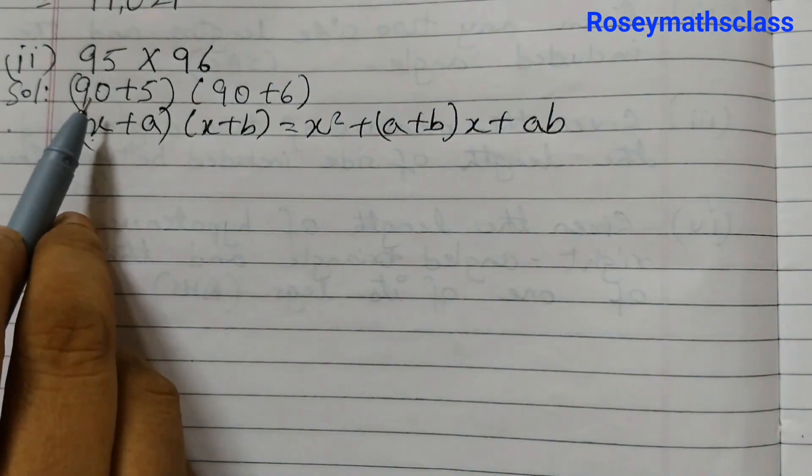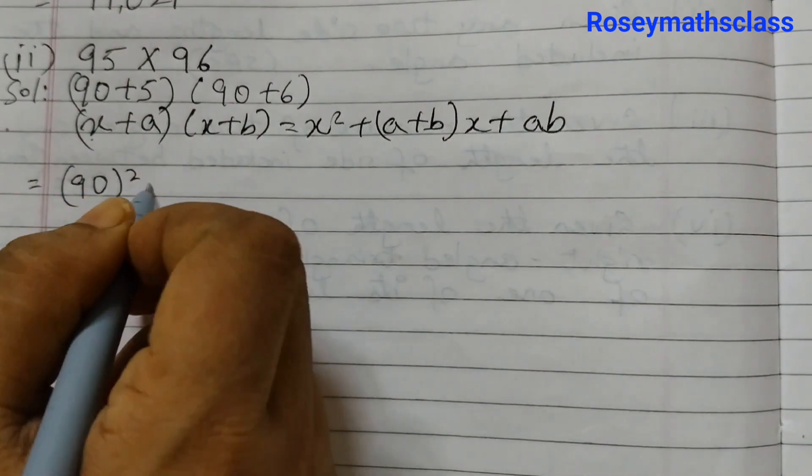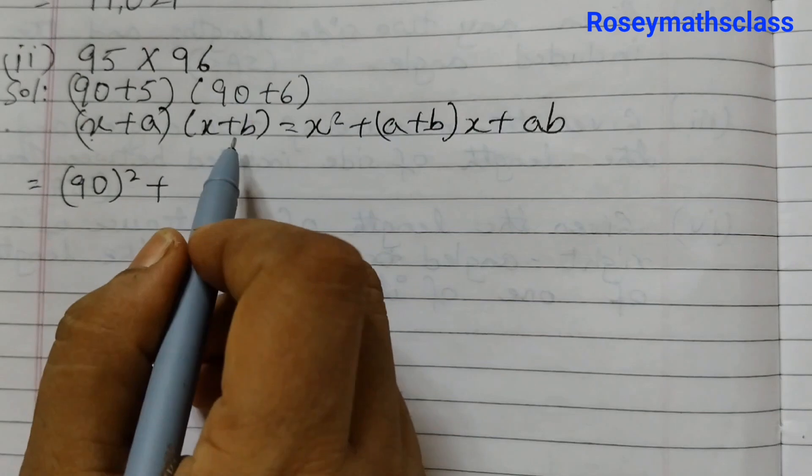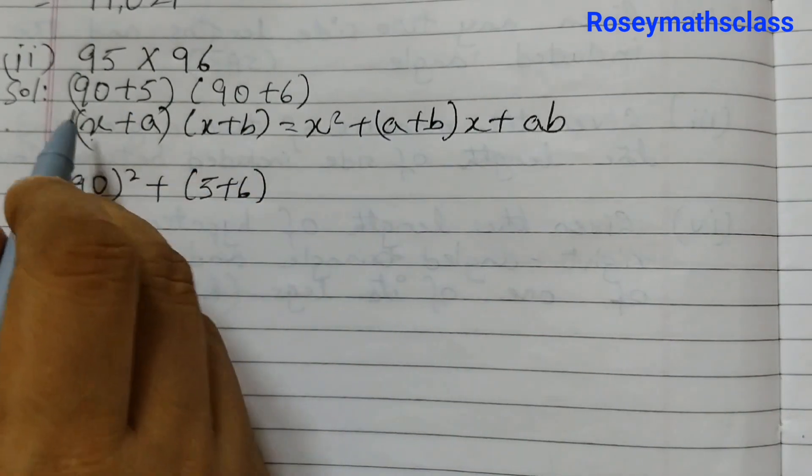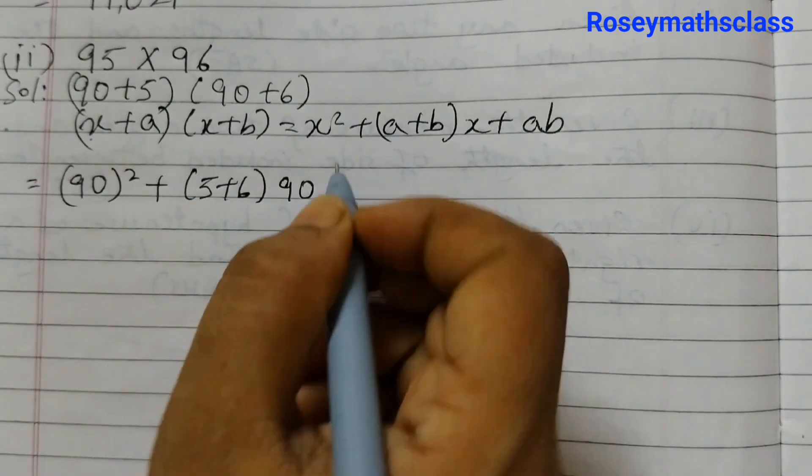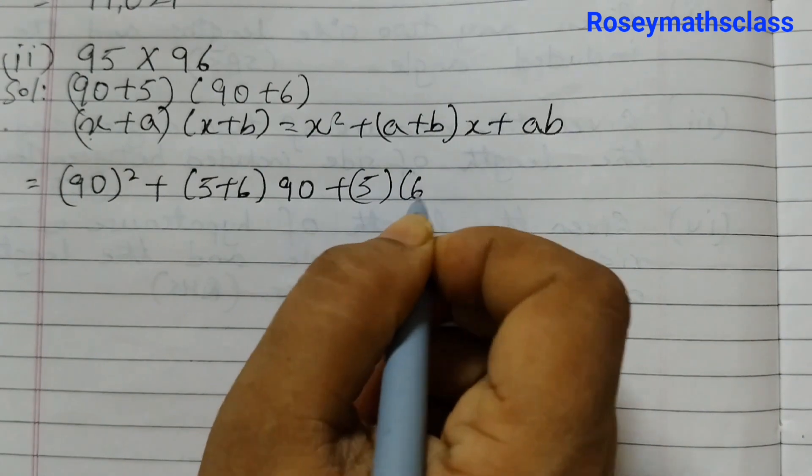Now here x is 90, so 90² + (5+6) into x, x is 90, plus ab, 5 into 6.